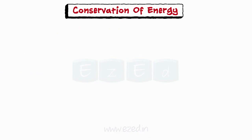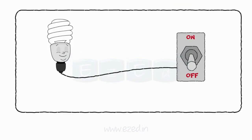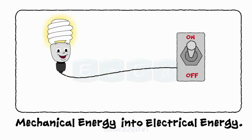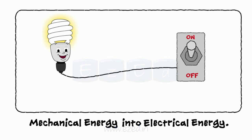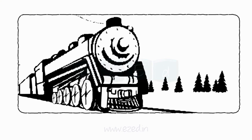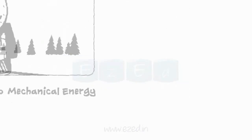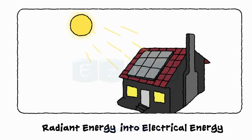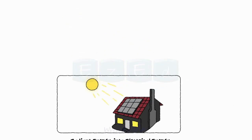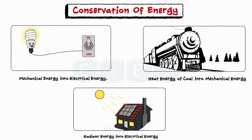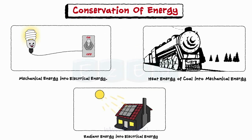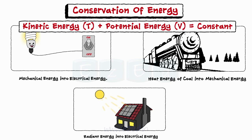The law of conservation of energy says that energy is neither created nor destroyed. When we use energy, it doesn't disappear — we change it from one form of energy into another. A train running on a coal engine converts the heat energy of coal into mechanical energy. Solar cells change radiant energy into electrical energy. Energy changes form, but the total amount of energy in the universe stays the same. We are only concerned with mechanical energy: kinetic energy and potential energy. Here is the equation for conservation of energy.